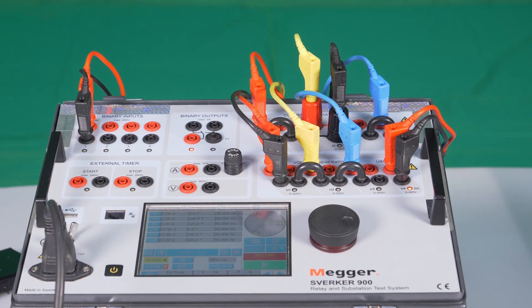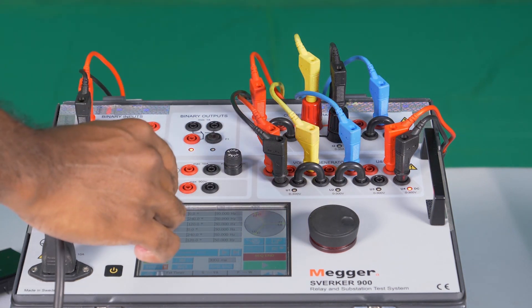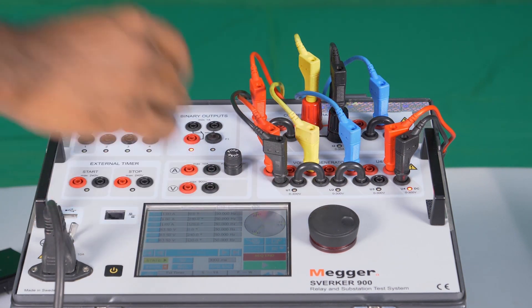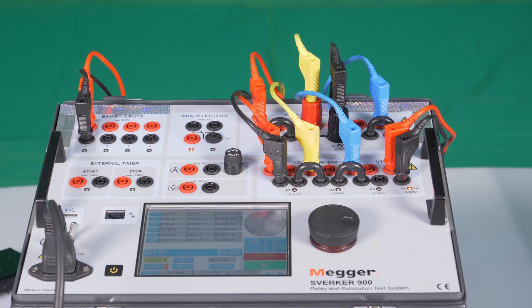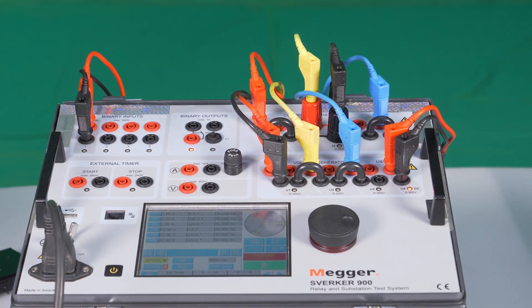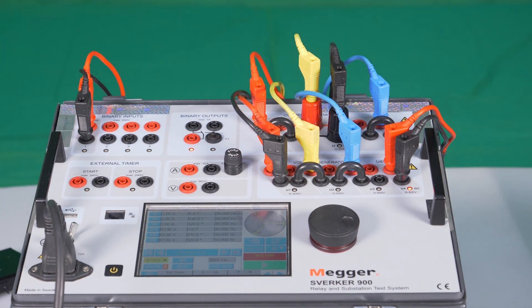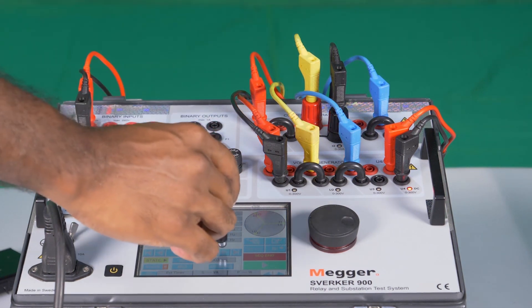State 1 is configured as a healthy state with 63.5 volts for a period of 3 seconds. State 2 is configured for overvoltage condition with 90 volts.